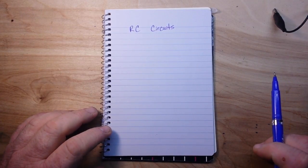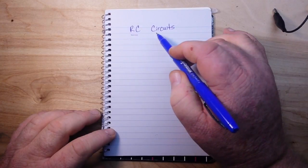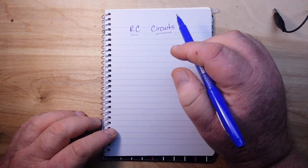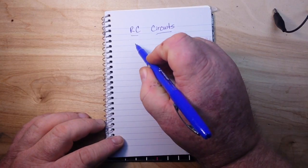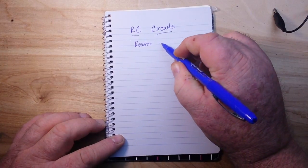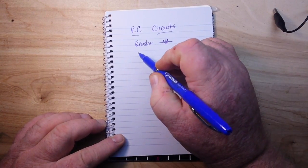Hey, what's happening guys? Today we're going to jump back into the basics of electronics and talk a little bit about RC circuits. What are RC circuits? They are a circuit that contains a resistor and a capacitor.